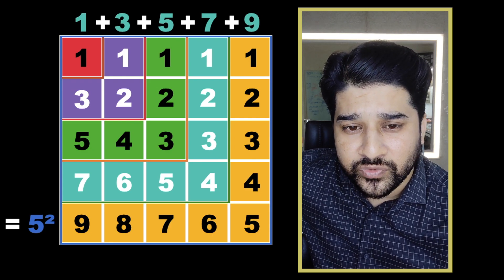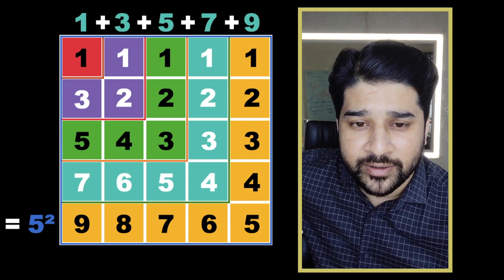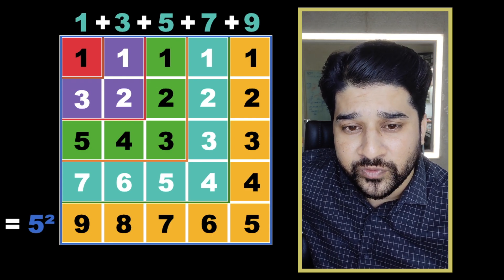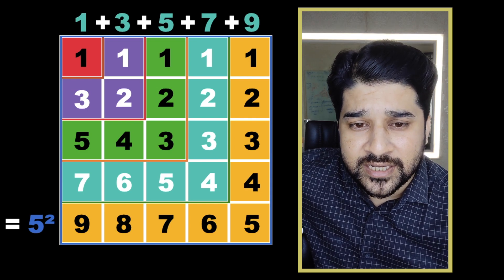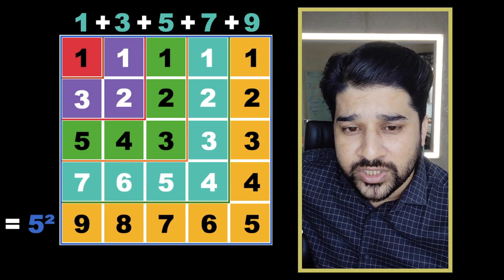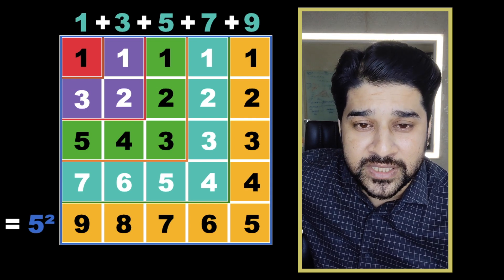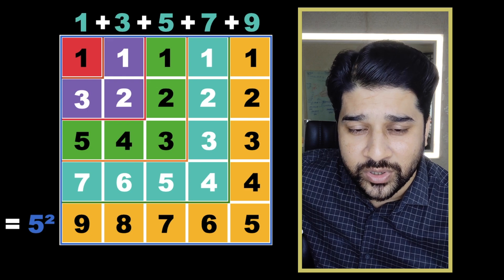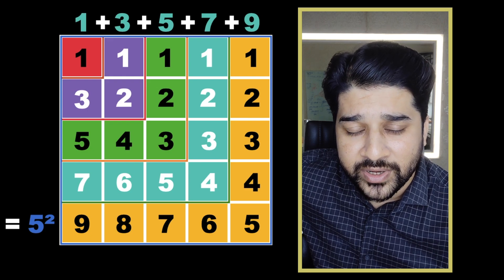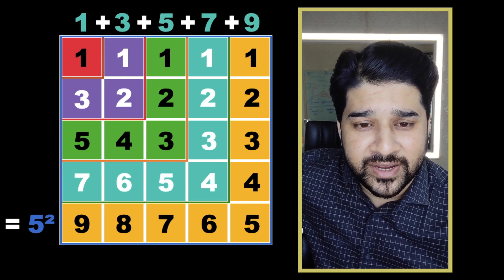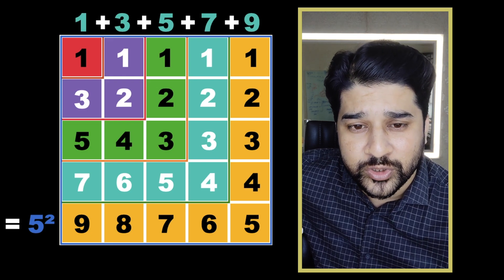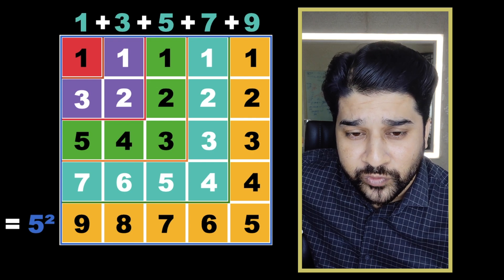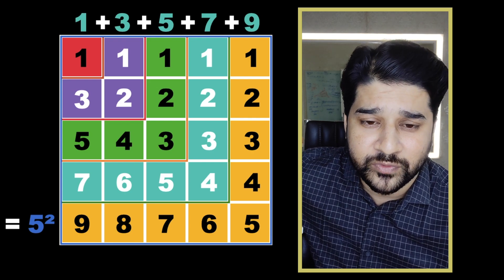So if you notice: one plus three equals two squared, which means the sum of the first two odd numbers is two squared. One plus three plus five equals three squared, which means the sum of the first three odd numbers is three squared. And one plus three plus five plus seven equals four squared, which means the sum of the first four odd numbers is four squared.